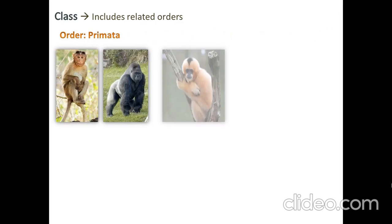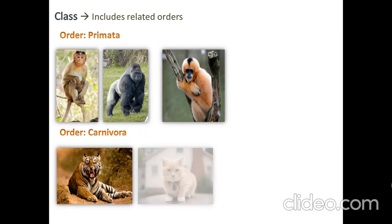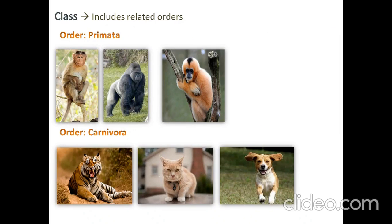Class includes related orders. Order Primates — monkey, chimpanzee, gorilla — and order Carnivora — tiger, cat, dog — they all fall under the class Mammalia because they are all mammals.